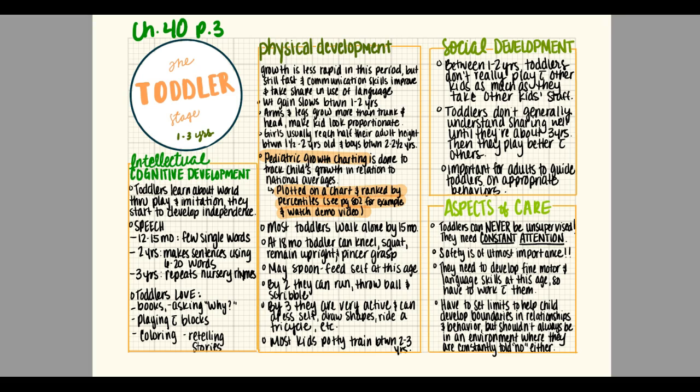Most toddlers walk alone by 15 months. At 18 months a toddler can kneel, squat, remain upright, and use their pincer grasp — they may spoon-feed themselves at that age, though not all of it gets in their mouth. By two they can run, throw a ball, and scribble. By three they are very active and can dress themselves, draw shapes, and ride a tricycle. By about two to three years most kids are well potty trained and can use the toilet.